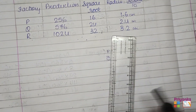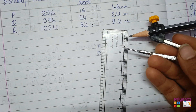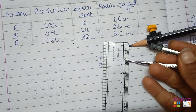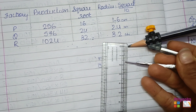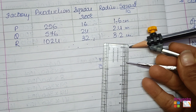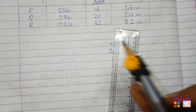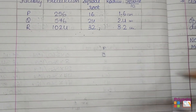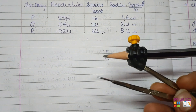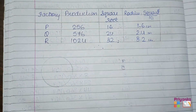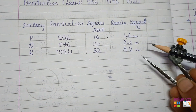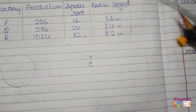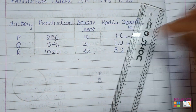For factory P, take a scale margin of 1.6 cm and draw the circle with that radius using a compass. This size is enough to fit in your notebook. Then continue to draw the circle for factory Q with radius 2.4 cm in the same way.